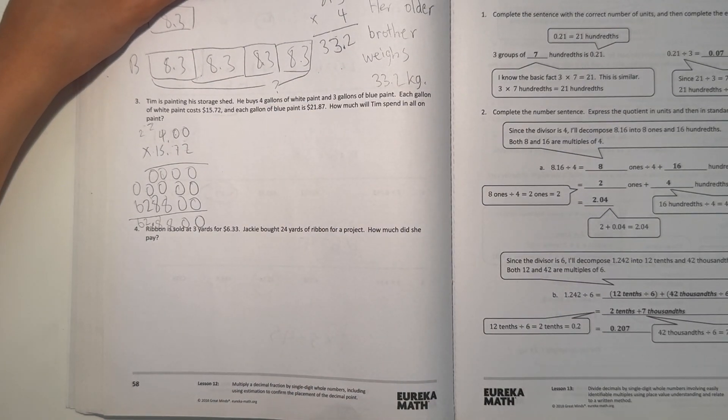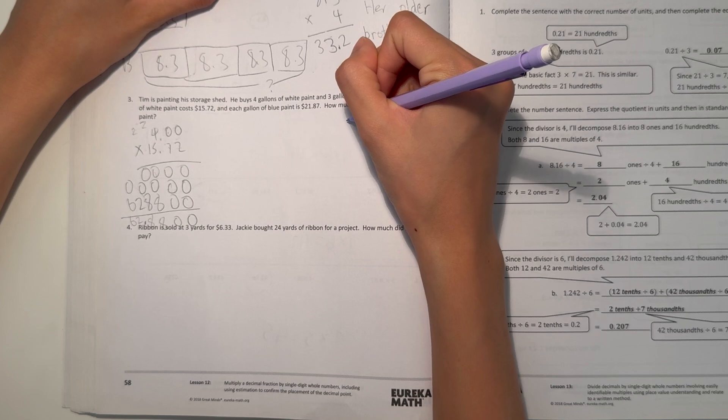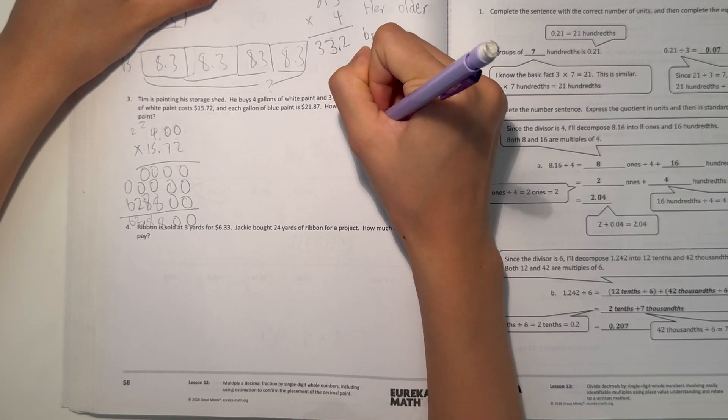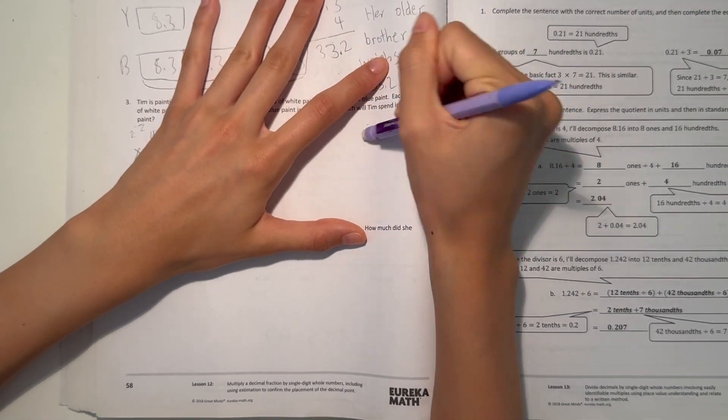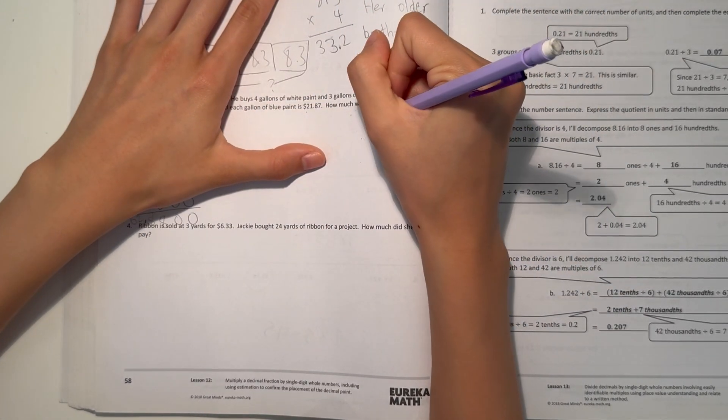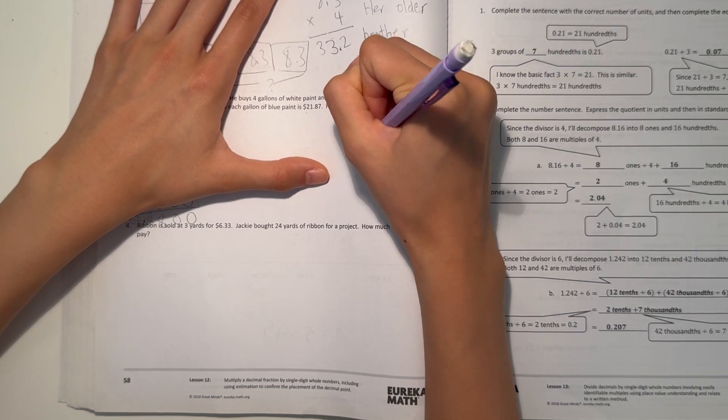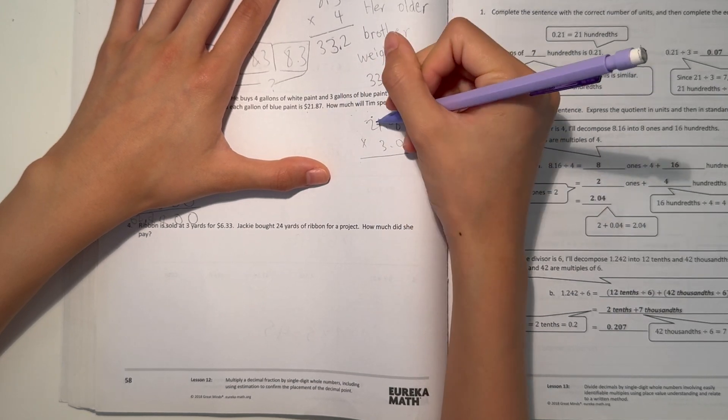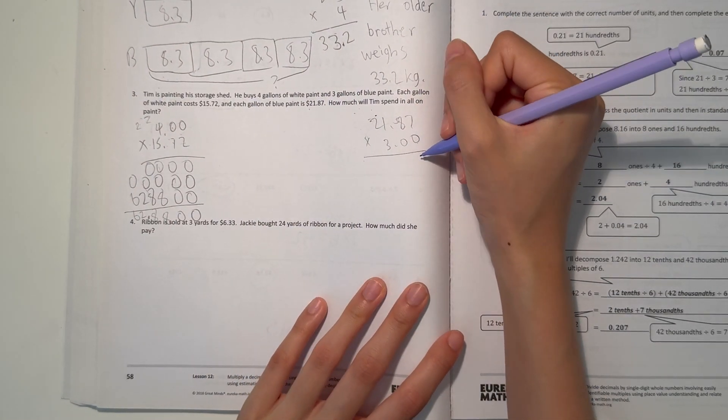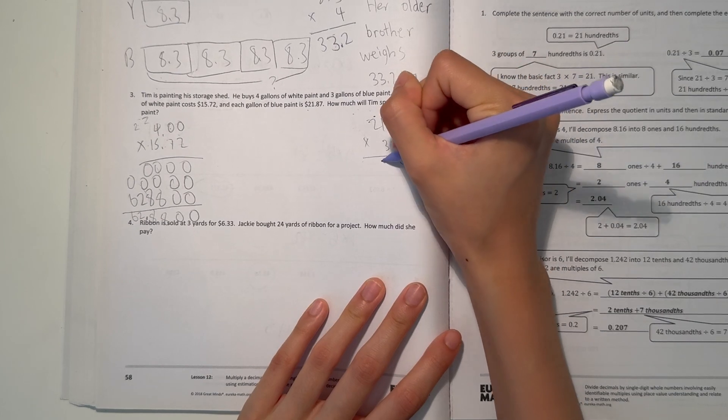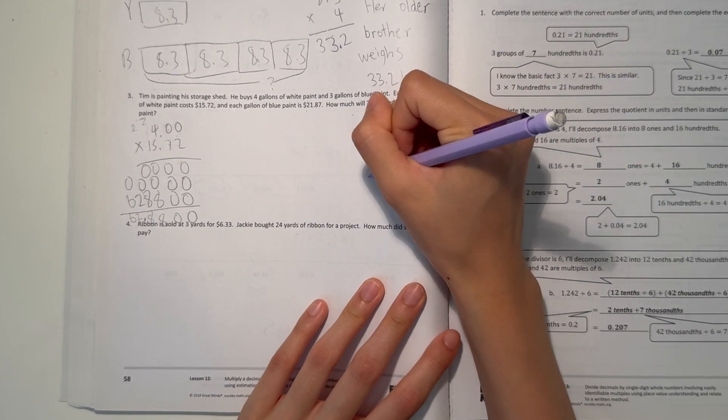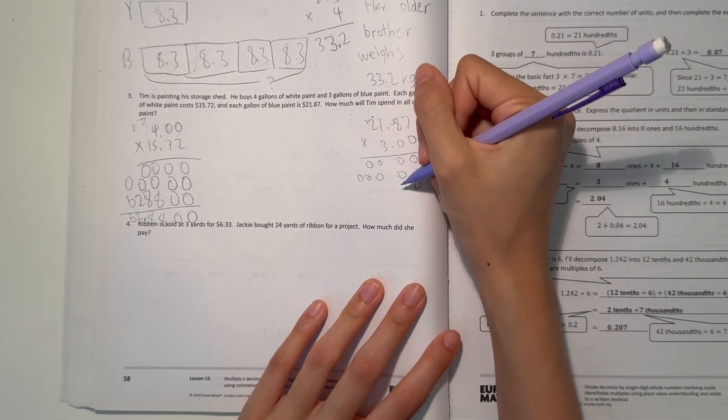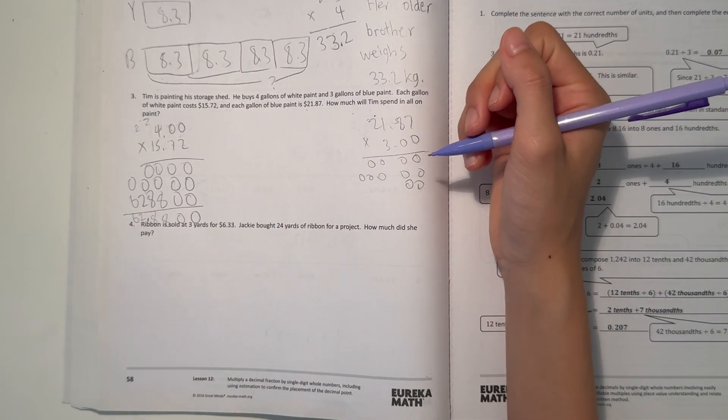But now let's see the blue paint. So the blue paint, let's do it on the right side. 3 gallons. And then each gallon is 21.87 times 3. Alright, so first of all, these digits times 0 is 0. So that would be 0, 0, 0, 0. And 2, 0. Alright, now we have two 0's. Why is there a gap there? No.